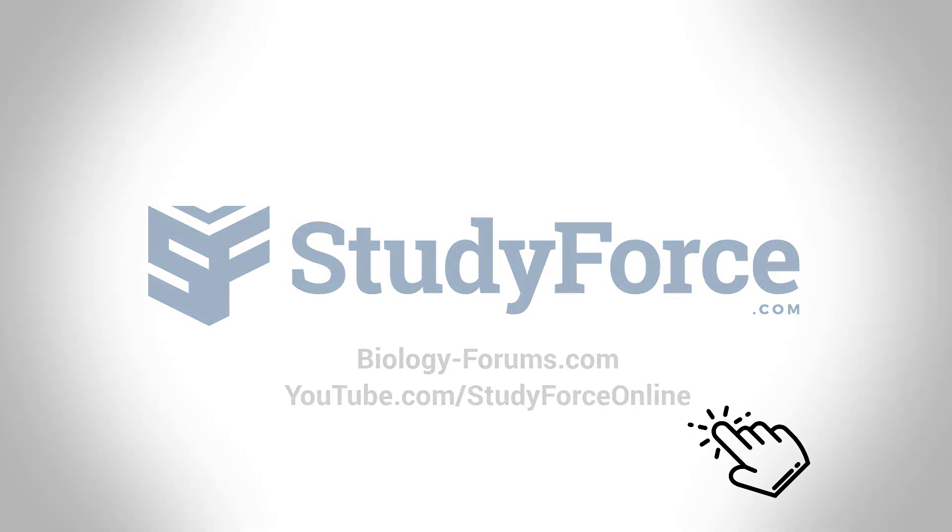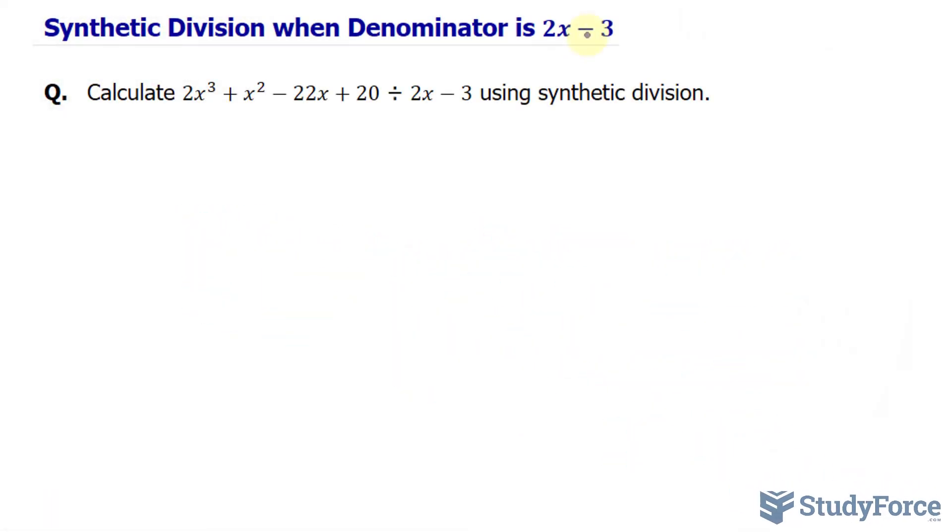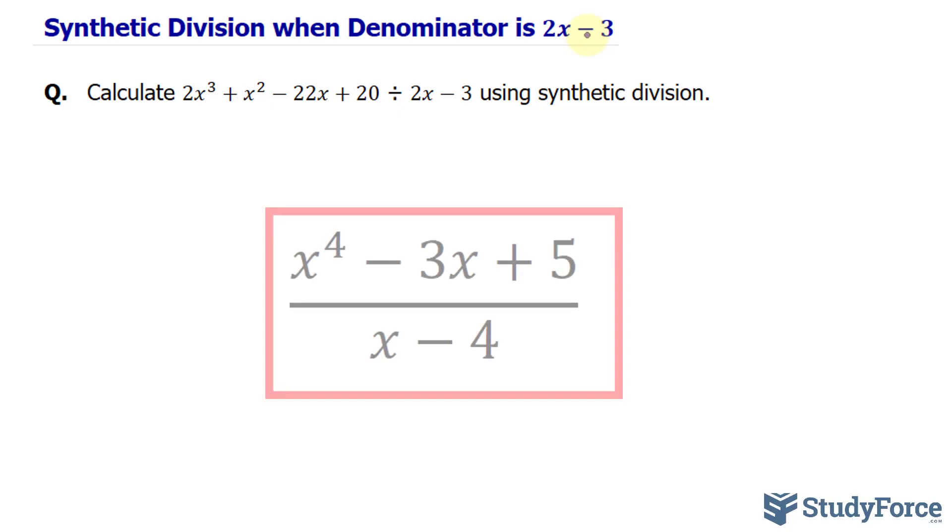In this lesson, I'll show you how to synthetically divide when the denominator is 2x minus 3. In our previous examples, we looked at divisors that were x minus 4, and they didn't have this leading coefficient of 2. So what do we do in this case?